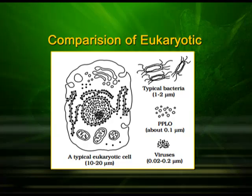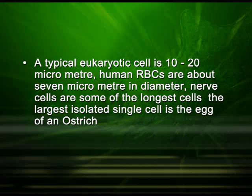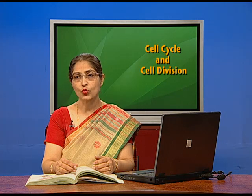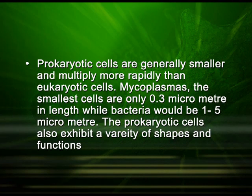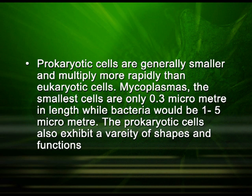Compare a generalized eukaryotic cell with other organisms and notice the difference in their size. A typical eukaryotic cell is about 10 to 20 micrometers in size. The human red blood cells are about 7 micrometers in diameter. Nerve cells are some of the longest cells. The largest isolated single cell is the egg of an ostrich. Prokaryotic cells are generally smaller and they multiply more rapidly than eukaryotic cells. Mycoplasmas, the smallest cells, are only about 0.3 micrometers in length, while certain bacteria could be 1 to 5 micrometers.